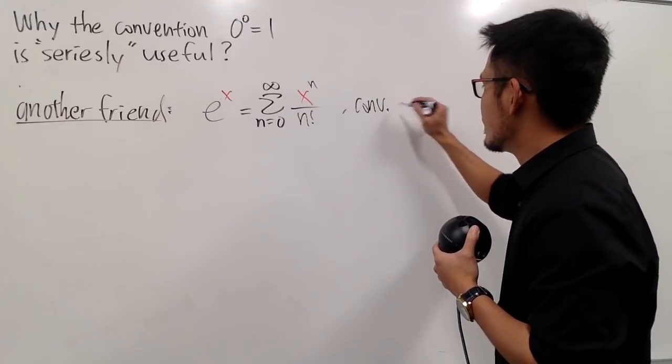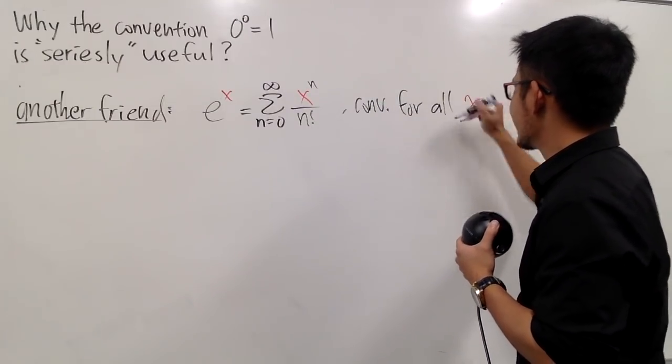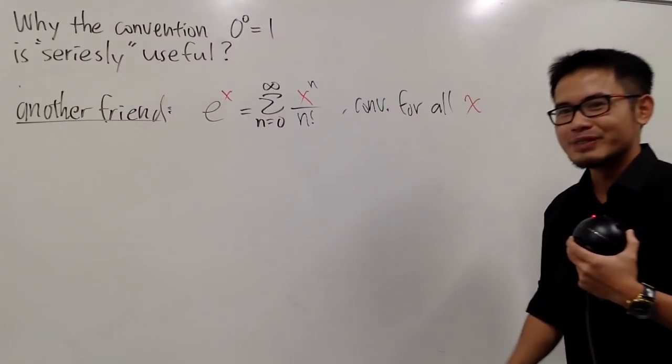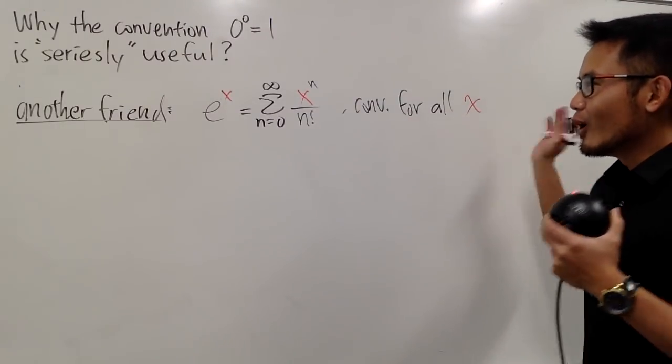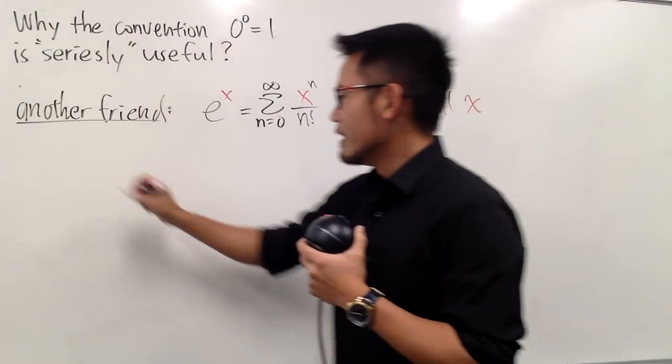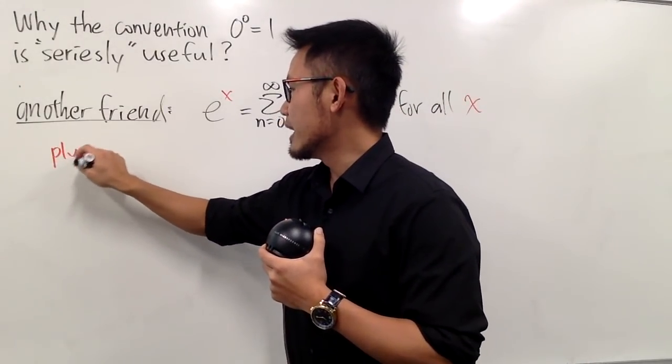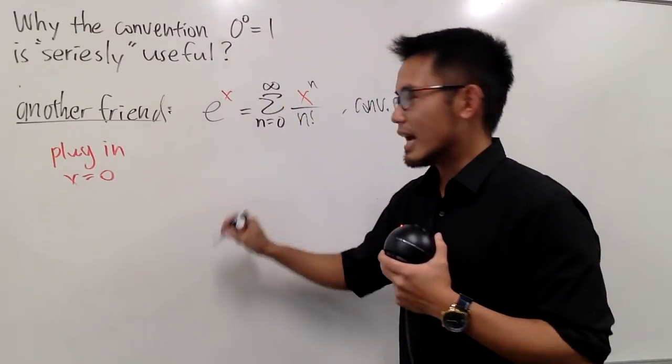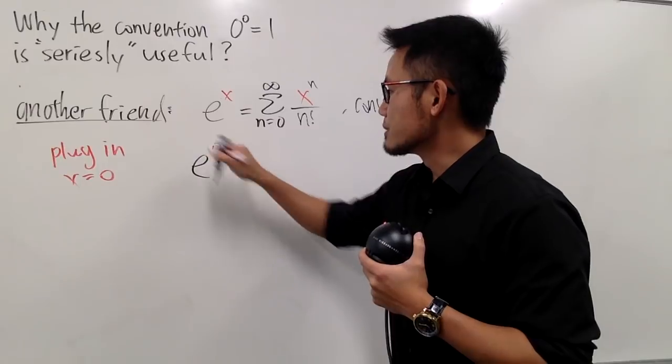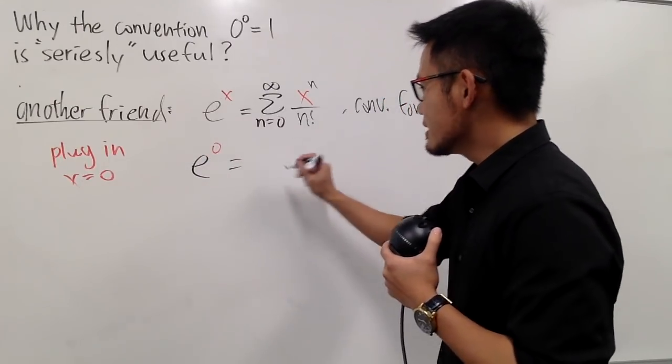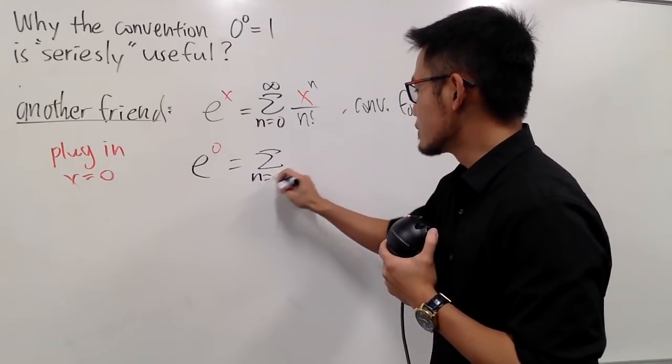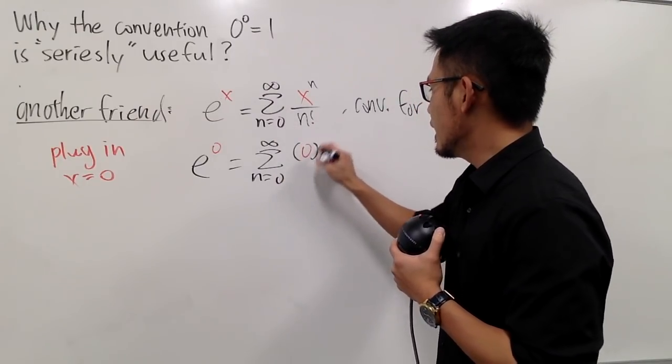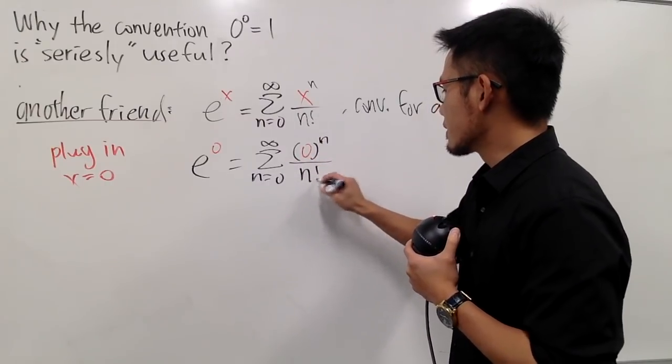Aha, got you. Converge for all real value x. We are in calculus 2, so yeah, all real number x. Of course, all real number x, I can definitely use 0. So, let me just say plug in 0 again. x is equal to 0. So, on the left-hand side, I will have e to the 0 power. And check this out. On the right-hand side, I will have the sum as n goes from 0 to infinity. On the top here is 0 to the nth power over n factorial.